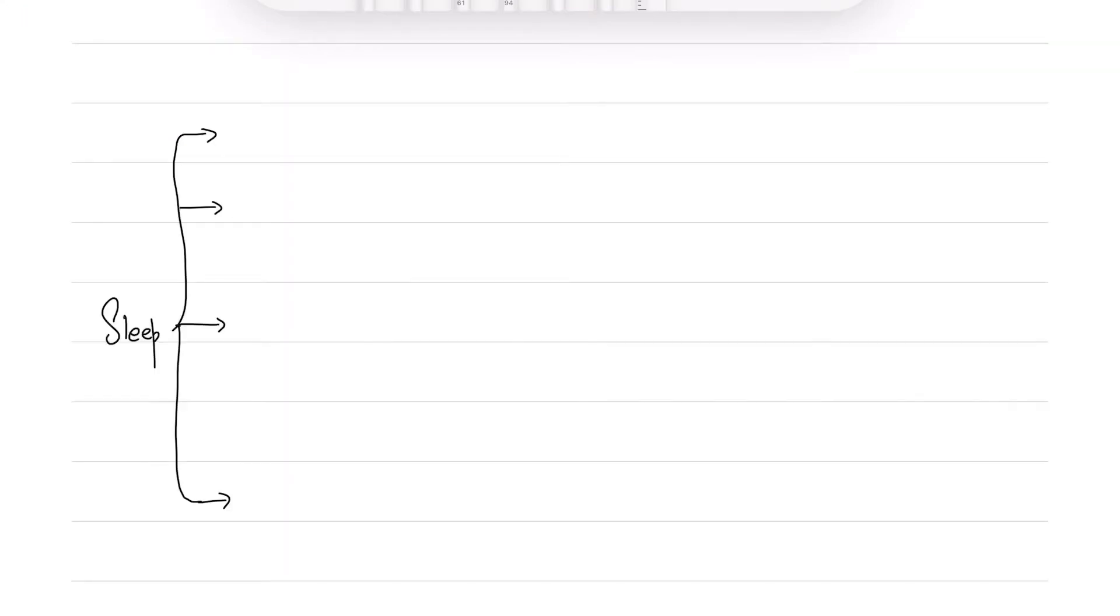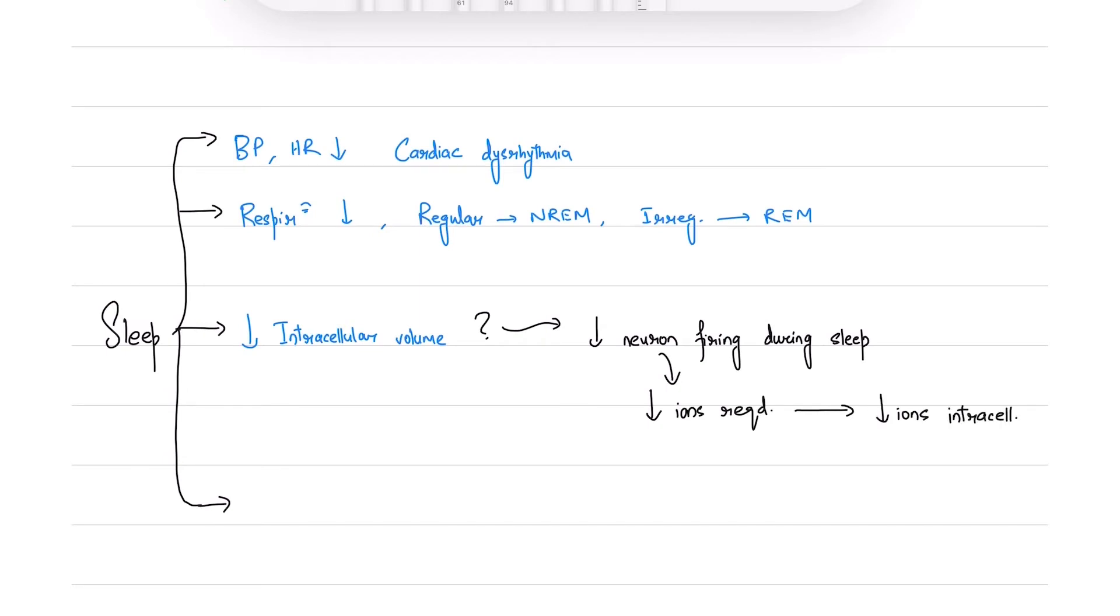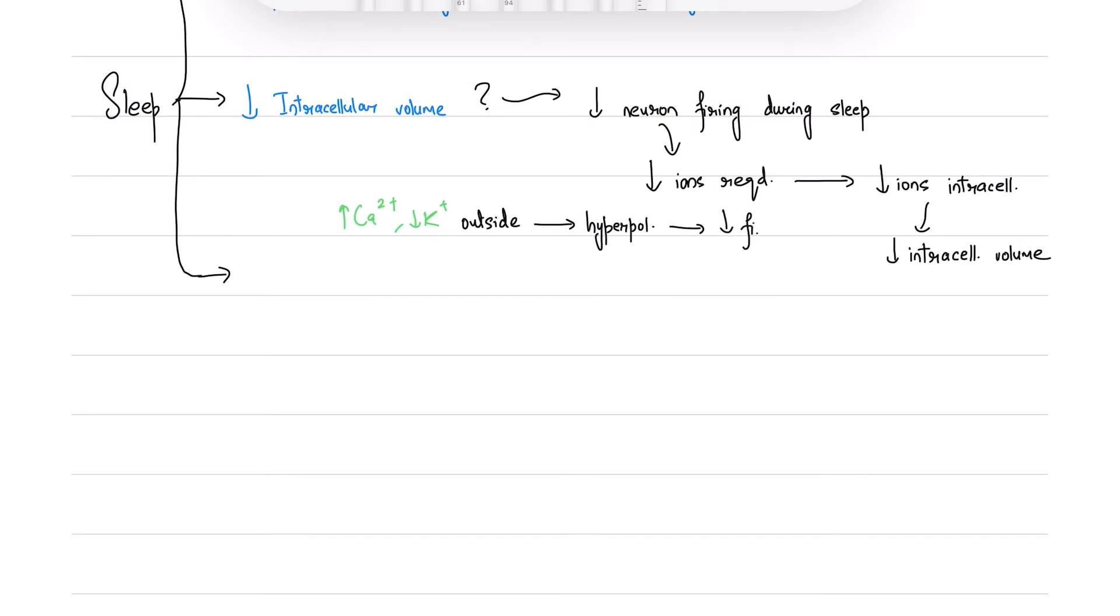Now that we have the basic physiology, we'll talk about the effects of sleep on the body. BP and heart rate decrease during NREM sleep, while cardiac dysrhythmia may be seen in REM. Respiration is slow during sleep; it's regular during NREM and irregular in REM. The intracellular volume in the brain is reduced. This happens because during sleep, the neurons fire less compared to when we're awake. Less firing translates to fewer ions required, so intracellular ion concentration decreases, leading to decreased intracellular volume by osmotic effects.